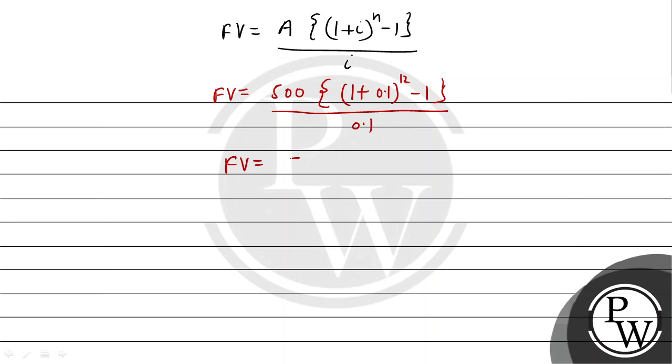From here, future value is equal to 500. This will give you a value after minus - the value will be 2.138. This has to be divided by 0.1. So future value comes out to be